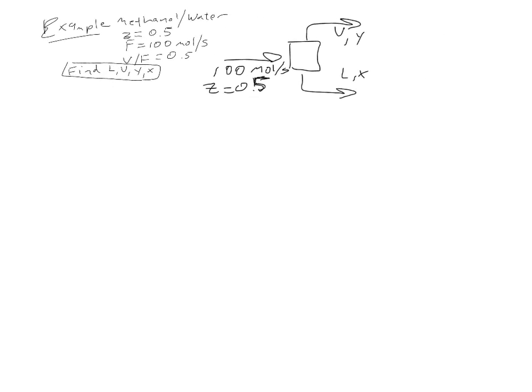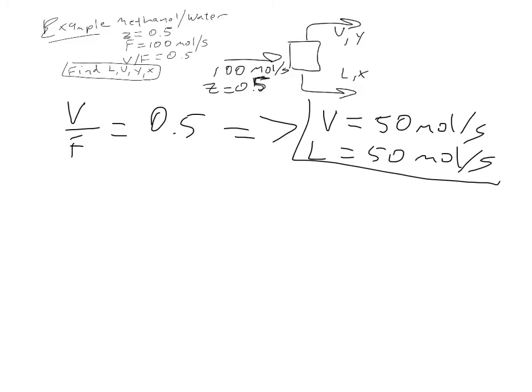We can quickly do a material balance. V over F equals 0.5, and based on F and the overall material balance, we find that V equals 50 moles per second and L equals 50 moles per second. There's our material balances.